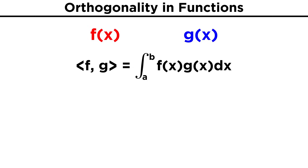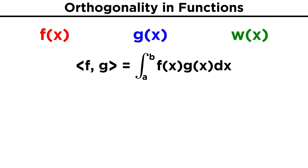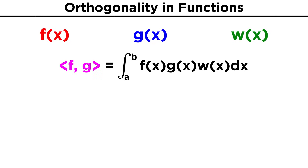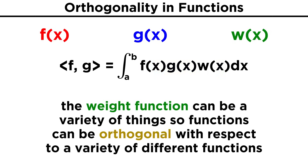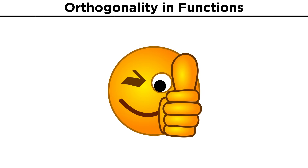There are many things to consider when looking at the inner product of two functions. In fact, oftentimes an extra function w(x), referred to as the weight function, is added to the definition of the inner product, so that ⟨f, g⟩ equals the integral from a to b of f(x) times g(x) times w(x) dx. This weight function can be any of a variety of different things, meaning we can have functions that are orthogonal with respect to a variety of different functions. Orthogonality plays a key role in several aspects of math and science, helping us break down systems into distinct elements for easier understanding and problem solving. So to make sure we understand, let's check comprehension.